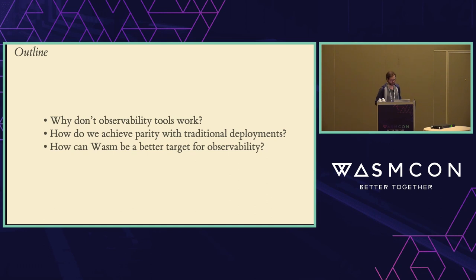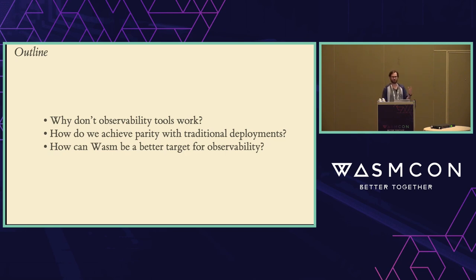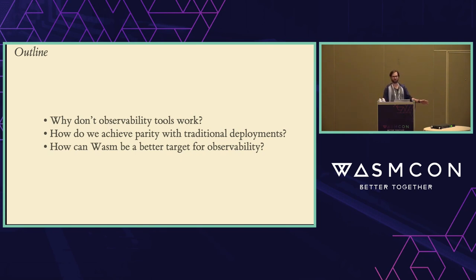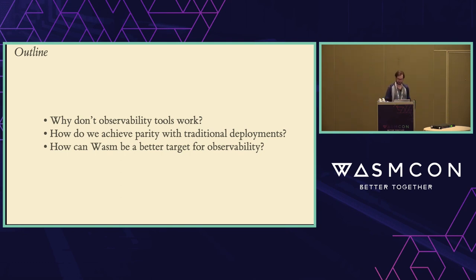A little outline of this talk: first, I'm going to talk about why observability tools don't work in Wasm. Then I'll talk about how I think we can achieve parity with traditional systems so it's equally as good as using a normal VM or deployment architecture. After that, I'm going to talk about the future and how Wasm can actually be a better target for observability. I also want to talk about how the main weakness right now can be turned into a strength and we can build some interesting things with that.